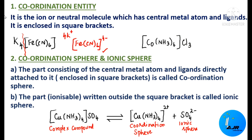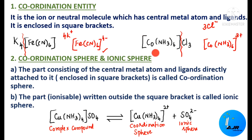In another example, [Co(NH₃)₆]³⁺ — chlorine always has a charge of minus 1, and here we have 3 chloride ions. So the cobalt complex with 6 NH₃ ligands has a charge of 3 plus. The first half is positive and the second half is negative. This is the coordination entity.